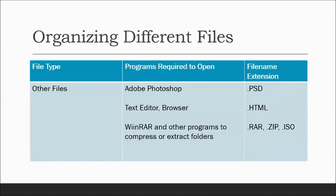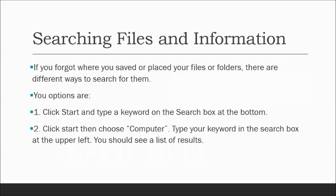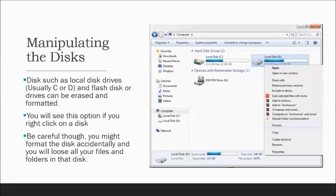To search for files and information: if you've forgotten where you saved a file, click the Start button and type a keyword in the search box, or open the Computer icon and type a keyword in the search box at the upper right. You'll then see a list of results from the search.